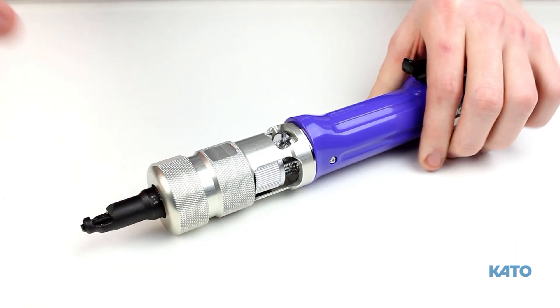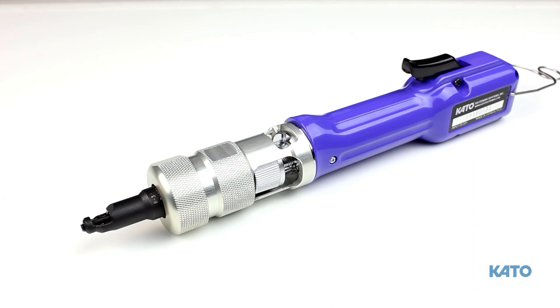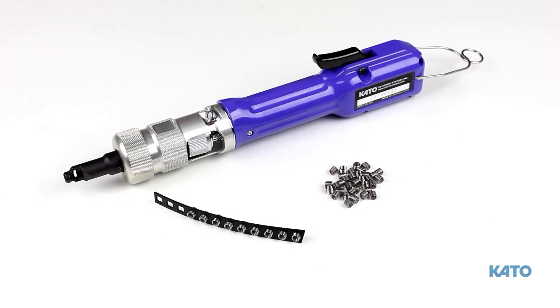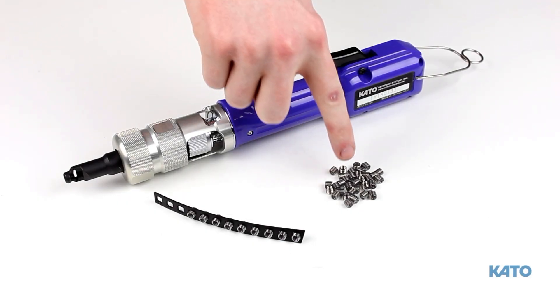Once again, a good hand tightening is all that is needed. Do not over-tighten. The front-end assembly is designed to work with bulk and strip-feed inserts.